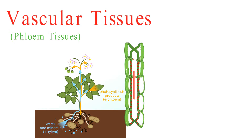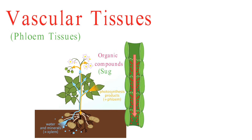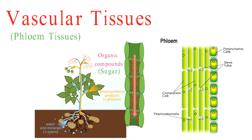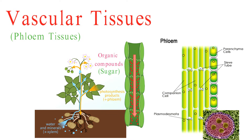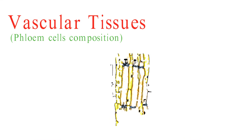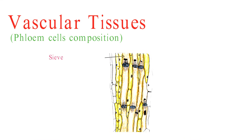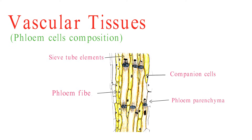Phloem is responsible for transporting organic compounds, primarily sugars, from the leaves to other parts of the plant. While xylem cells are typically dead at maturity, phloem cells in vascular bundles remain alive. They maintain their metabolic activity to support the movement of sugars throughout the plant, akin to a living transportation system. Phloem consists of sieve tube elements, companion cells, phloem parenchyma, and phloem fibers.